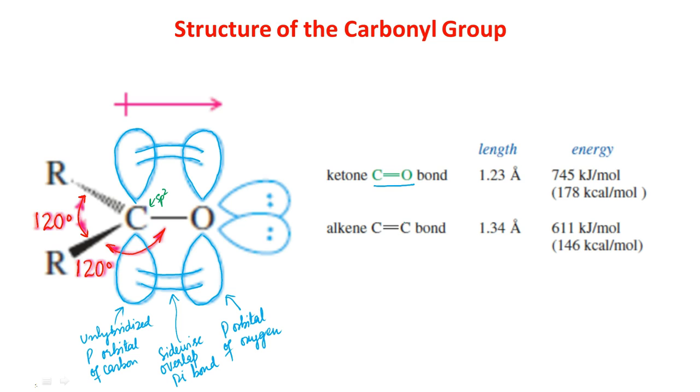The double bond between carbon and oxygen is similar to an alkene double bond, except that the carbonyl double bond is shorter, stronger, and polarized. The double bond of the carbonyl group has a large dipole moment because oxygen is more electronegative than carbon, and the bonding electrons are not shared equally.